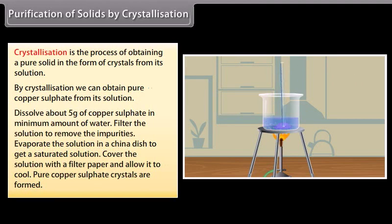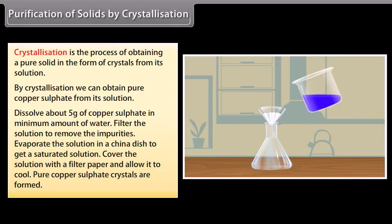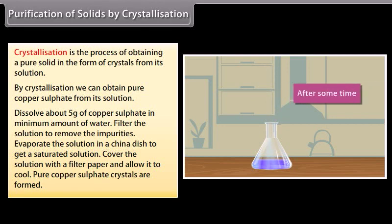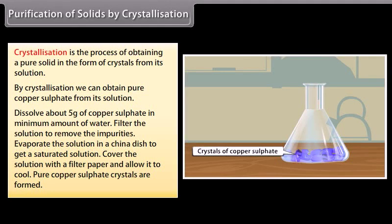Dissolve about 5 grams of copper sulfate in minimum amount of water. Filter the solution to remove impurities. Evaporate the solution in a china dish to get a saturated solution. Cover the solution with filter paper and allow it to cool. You will see pure copper sulfate crystals are formed.